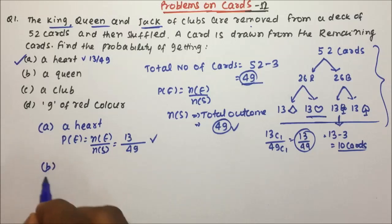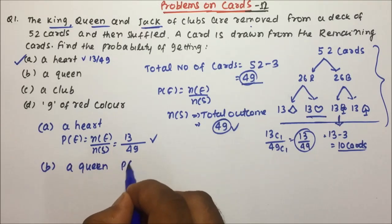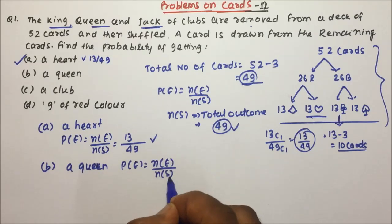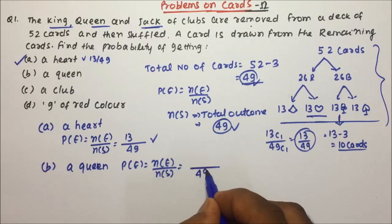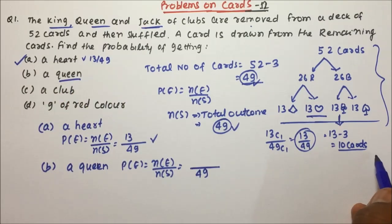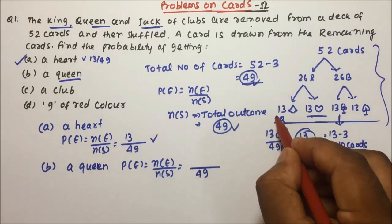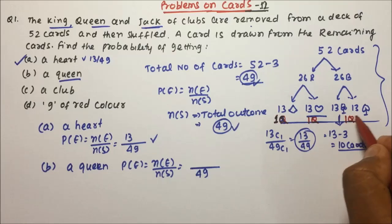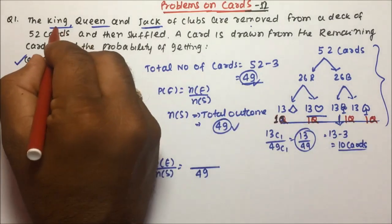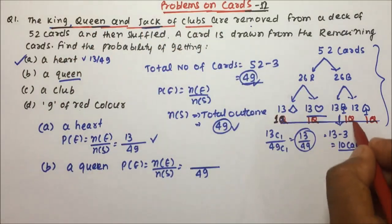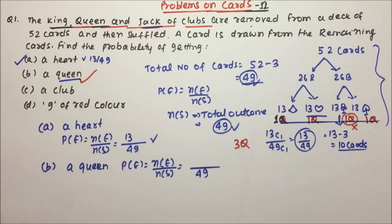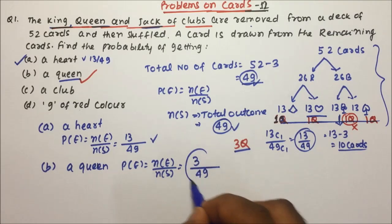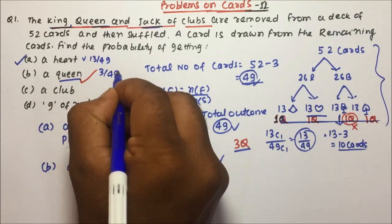Moving to question B: you want a queen. Probability = Ne / Ns, where Ns = total outcomes = 49. Originally there are 4 queens — one in diamond, one in heart, one in club, one in spade. But king, queen and jack of clubs were removed, so now we have only 3 queens. Selecting 1 from 3 gives 3 C1 = 3. So probability = 3/49.